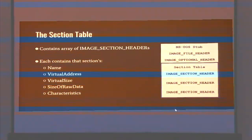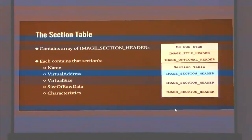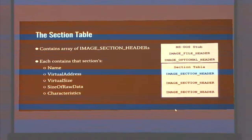The virtual address, virtual size, and size of the raw data are also specified for each section in the image section headers. That can be interesting because you might see odd section sizes where there's a small section size but a large physical size — for example, a packer might have a lot of packed data but it won't be loaded into memory in that section. Odd virtual or physical sizes may indicate malicious activity. The section characteristics are a set of flags for permissions — whether the section can be written to, read, or modified.